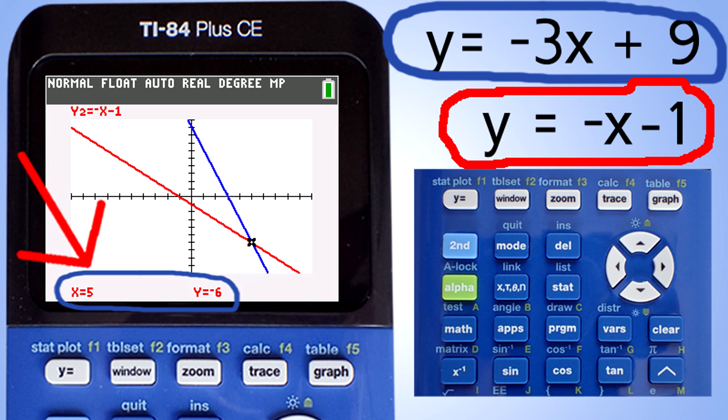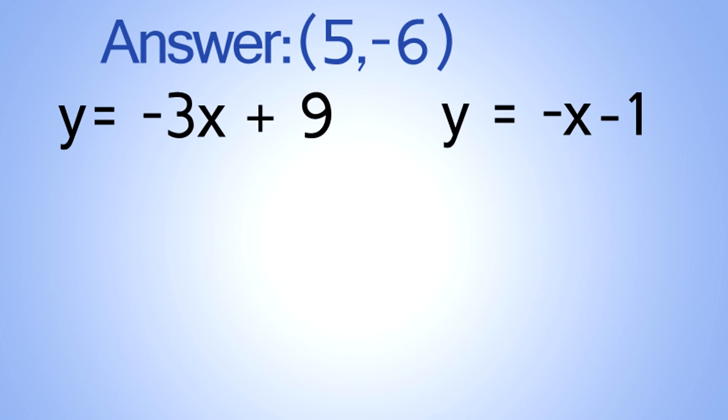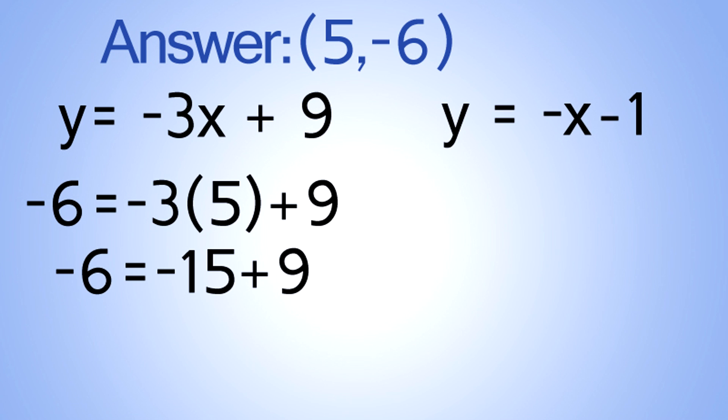However, we need to double-check that this is the answer by entering x equals 5 and y equals negative 6 into both equations to see if the equations are true. For the first equation we have negative 6 equals negative 3 times 5 plus 9. Multiplying the negative 3 times 5 gives us negative 6 equals negative 15 plus 9, and that gives us negative 6 equals negative 6, which is true.